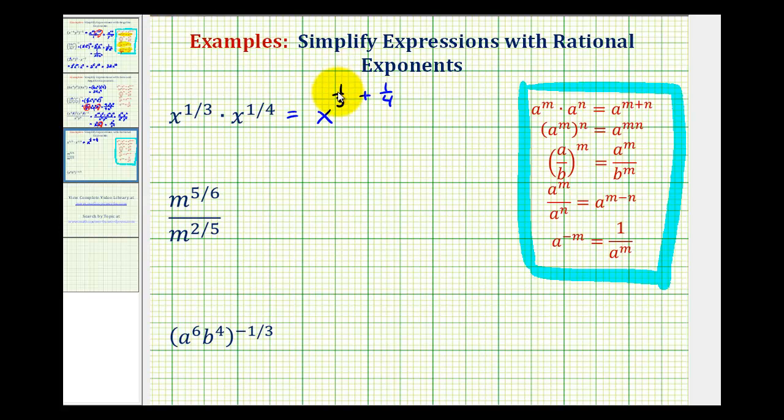So we can multiply this first fraction by four over four and multiply the second fraction by three over three. And notice how now we have a common denominator of 12. This becomes x to the power of four-twelfths plus three-twelfths. So this simplifies to x to the power of seven-twelfths.